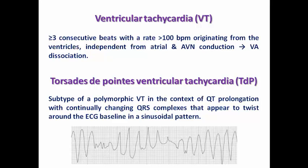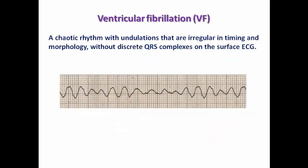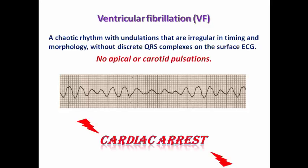Torsades de Pointes appears to twist around the ECG baseline — that is why it is called in French 'torsade de pointes.' Ventricular fibrillation is a chaotic rhythm with irregular undulation in timing and morphology, without discrete QRS complexes, and with no apical or carotid pulsation, resulting in cardiac arrest requiring immediate defibrillation and cardiac life support.